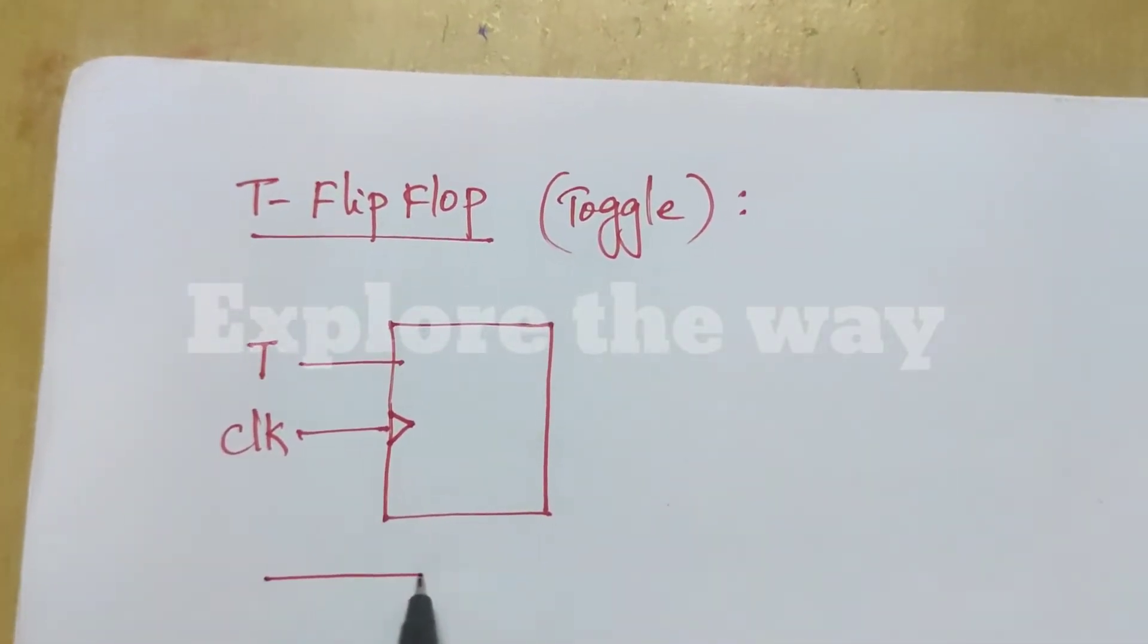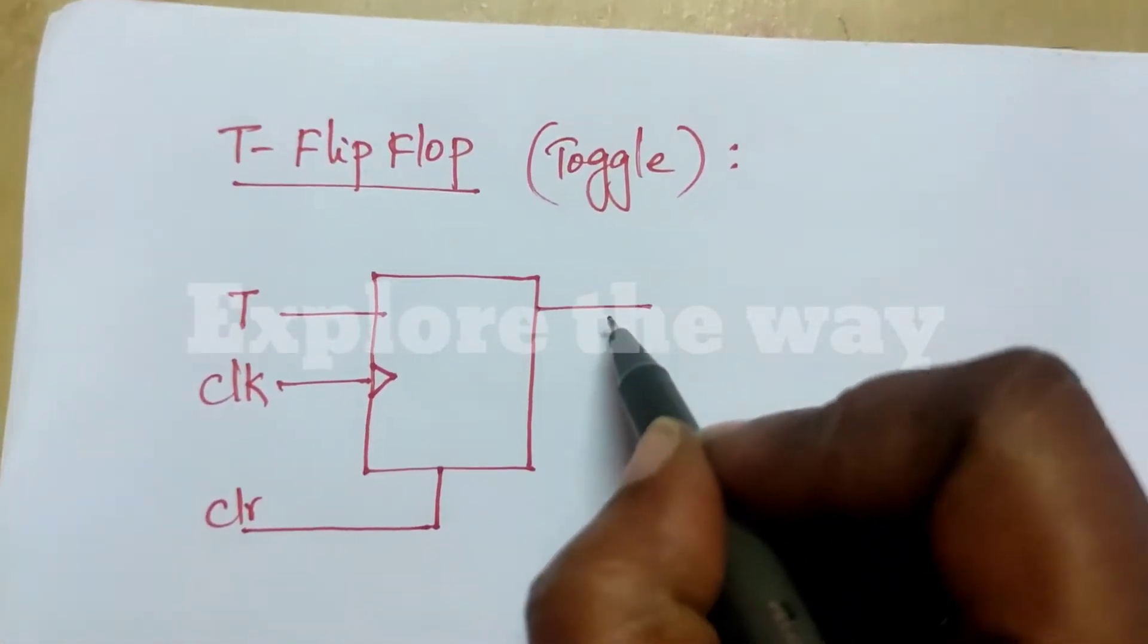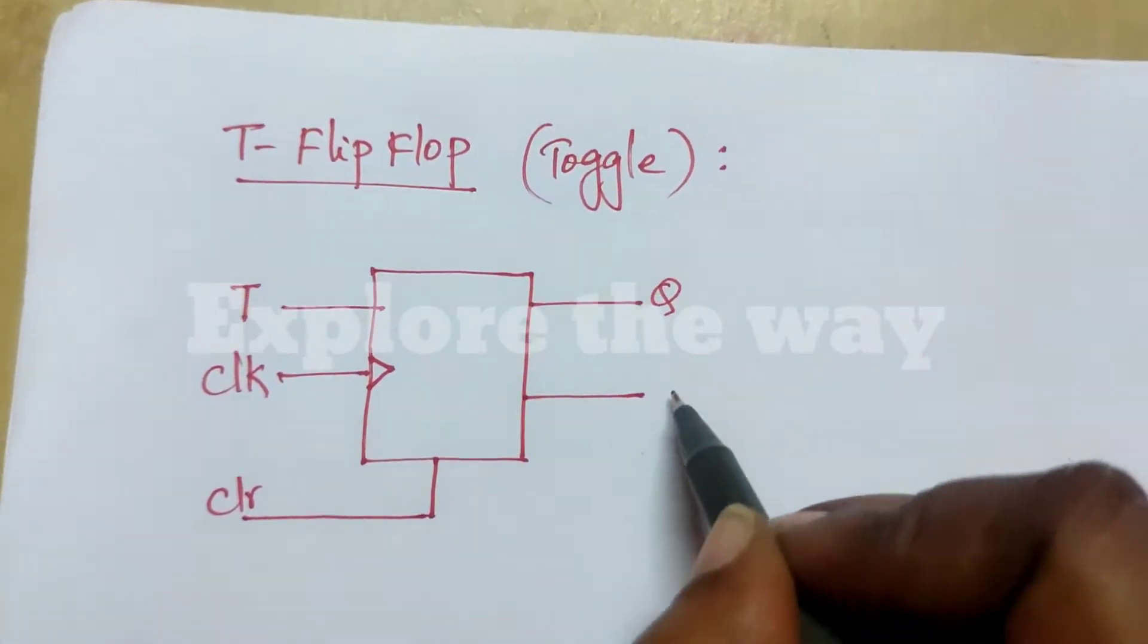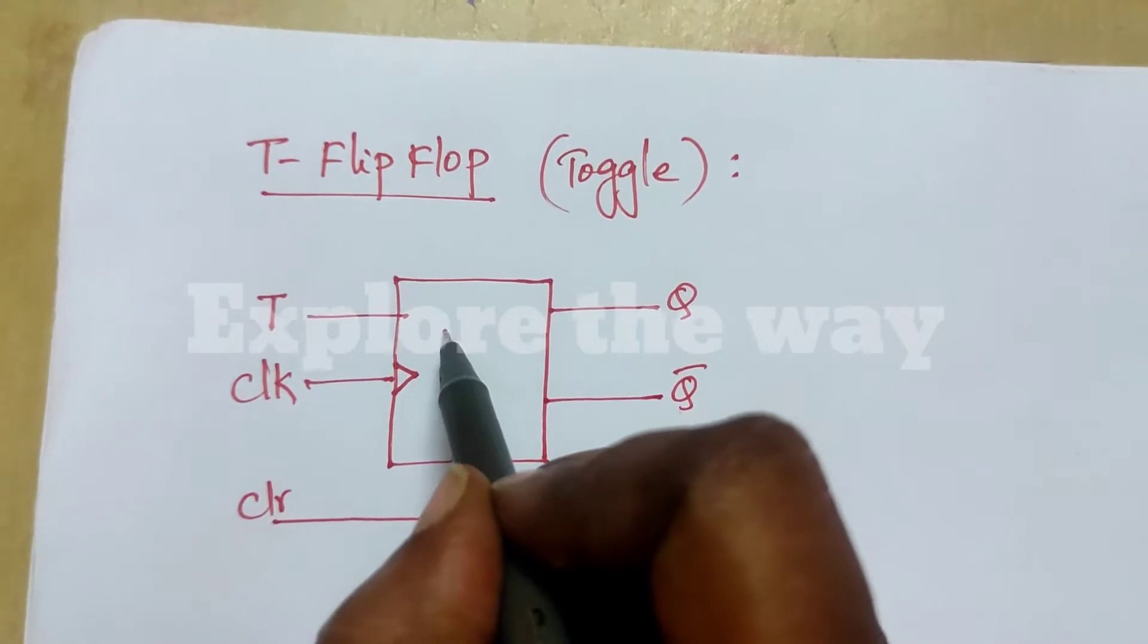And it has asynchronous clear input and it has two outputs, Q and Q bar. This is the T flip-flop.